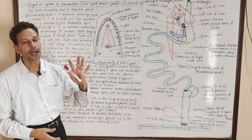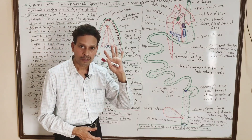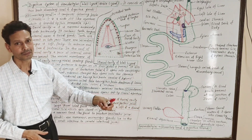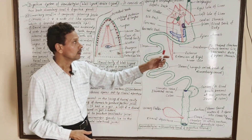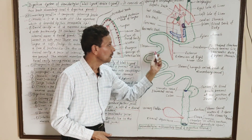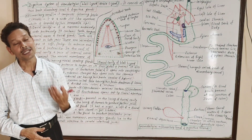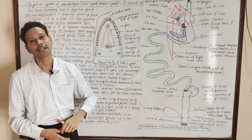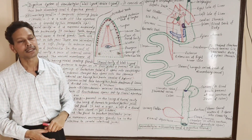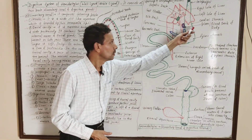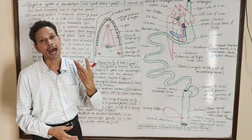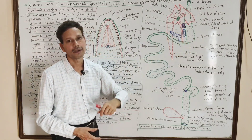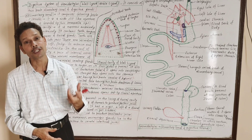To summarize, the alimentary canal of wall lizard Hemidactylus is complete. A few digestive glands are associated with this system. In the buccal cavity, buccal glands are present which secrete mucus. In the wall of the stomach, in the mucosa, gastric glands are present which secrete gastric juice.